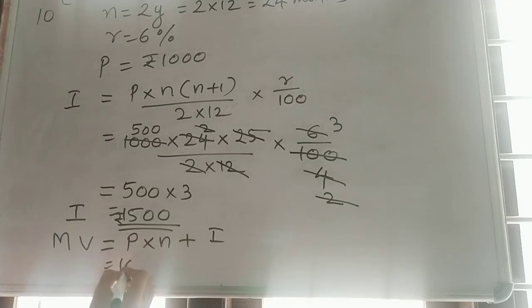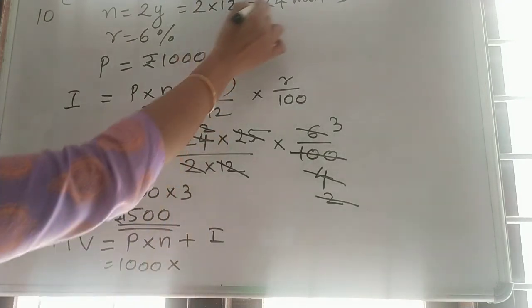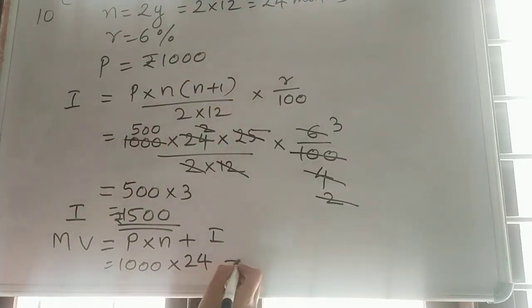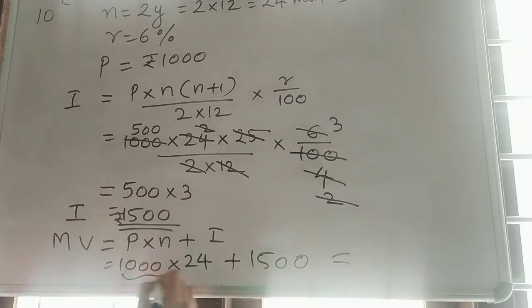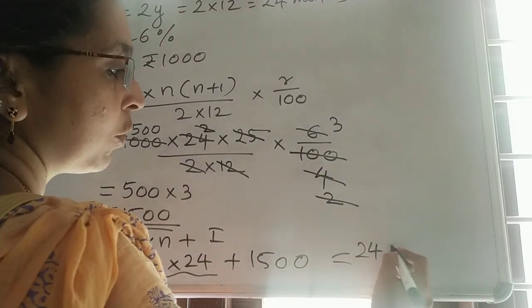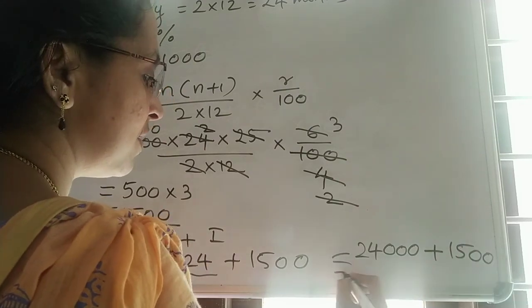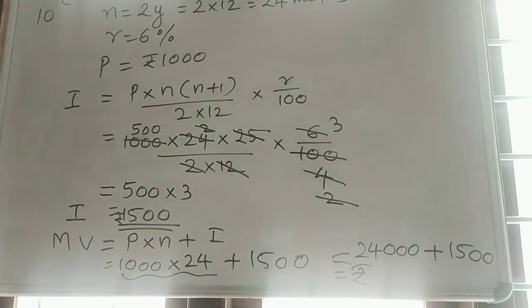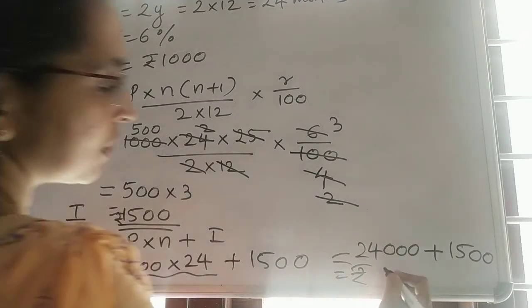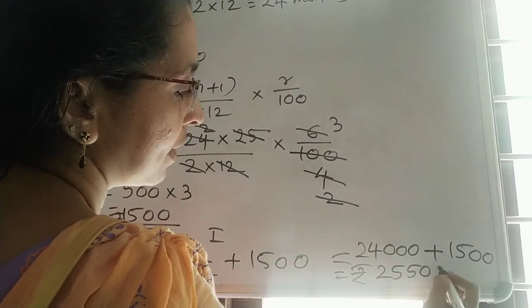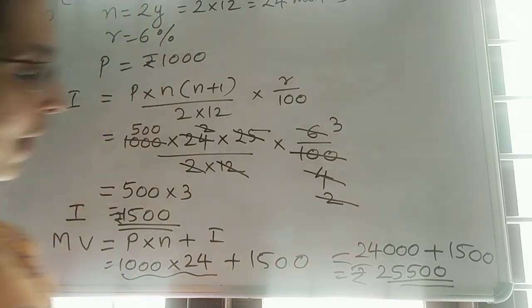What about P? P we have 1000 into N, 24 plus I we got it now, 1500 which is equal to 24 into 1000, that is 24,000. 24,000 plus 1500, I added 24,000 plus 1500 is 25,500. So, that is the maturity value 25,500. Thank you.